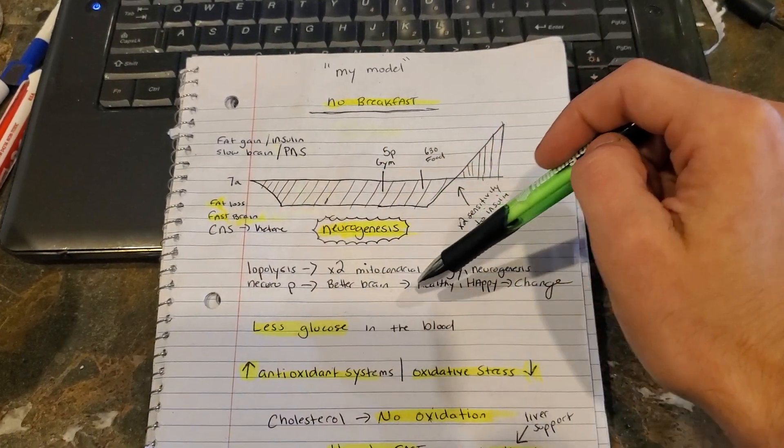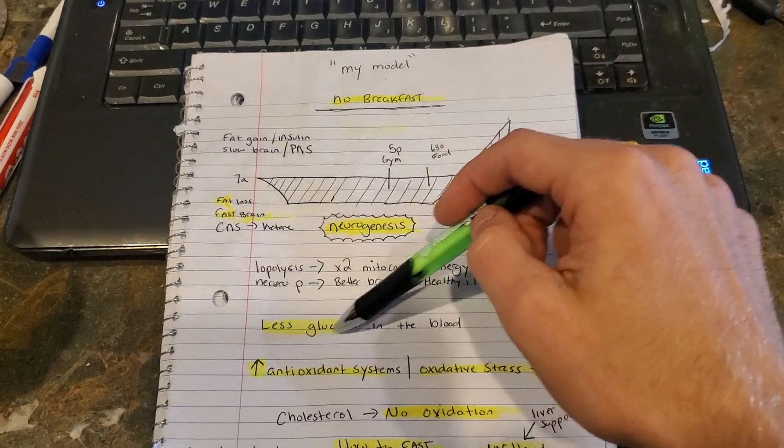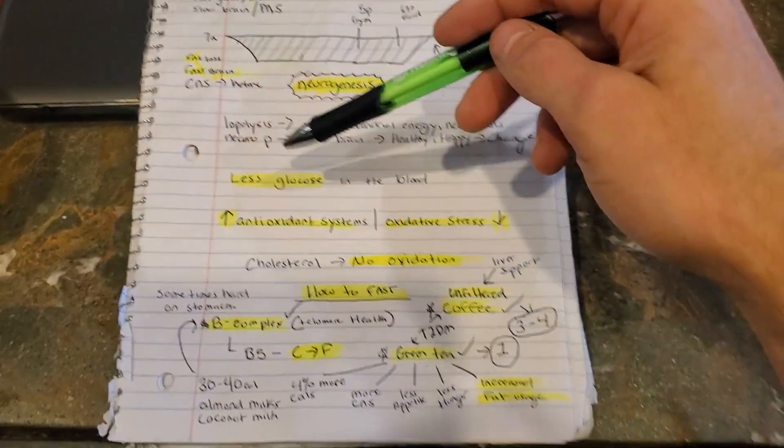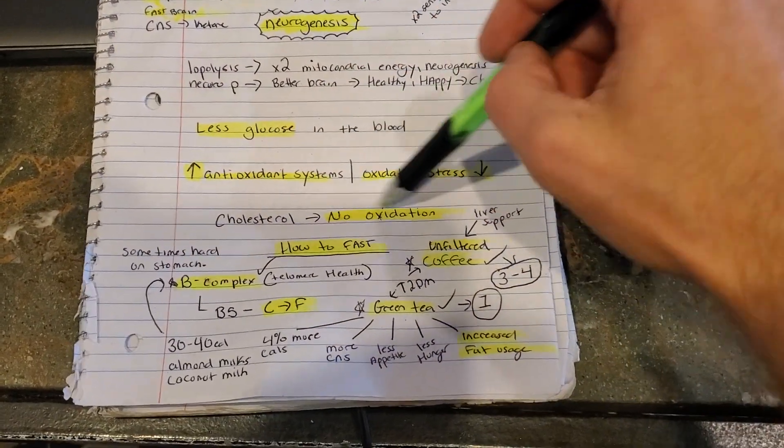Now when you start running on twice the mitochondrial energy, your brain is going to have more brain cells, more plasticity, and twice the energy. So you're going to have a better brain, healthier, happier change. Less glucose in your blood, less oxidative stress, more of your antioxidant systems can replace themselves. So cholesterol is not being oxidized.